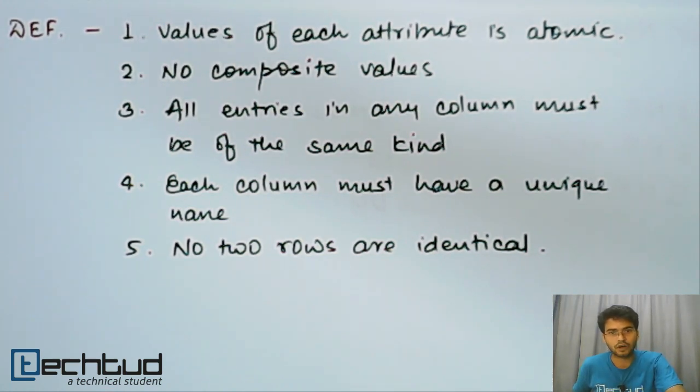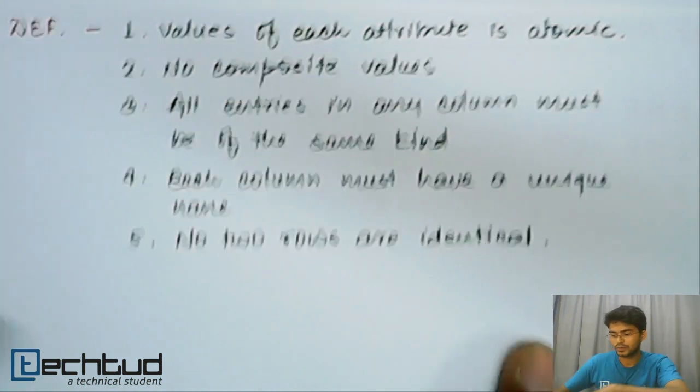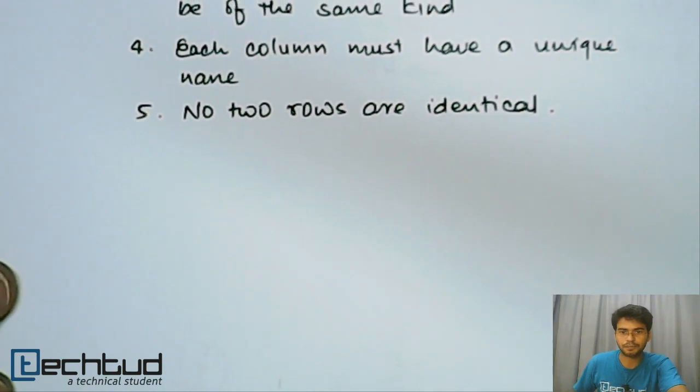The next criteria is all entities in any column must be of the same kind. What I mean to say is when you have a column of date of birth, you cannot write your name there. So the data type should be same. Each column must have a unique name, right? The column names, that is attribute names, must be unique and no two rows are identical.